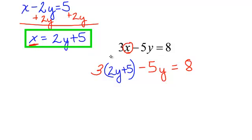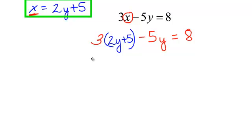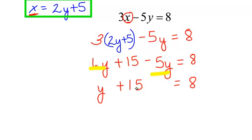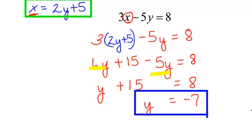I had 3 times x, so now it's 3 times 2y plus 5, and now we just do a little bit of algebra, a little distributive property here, 6y plus 15 minus 5y equals 8. We have some like terms, let's put those together. 6y and a negative 5y is just 1y, and when you subtract 15 from both sides, y will equal negative 7. So we do have y equals negative 7, but what about x?